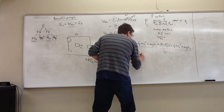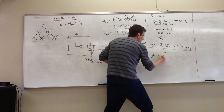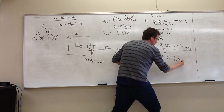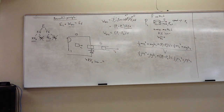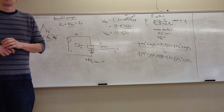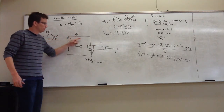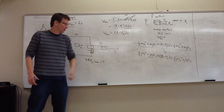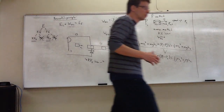Now there is no mention whatsoever of any particular bit of water. Everything in here is something you can generically say. I have the density of the fluid, the speed of the fluid in section one, the speed in section two, the height in section one, the height in section two, and the pressures on each side.